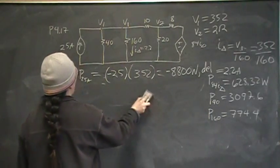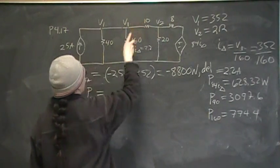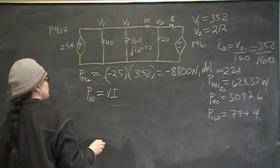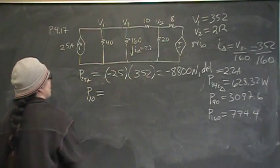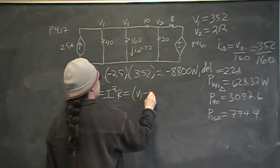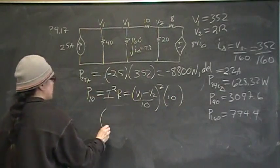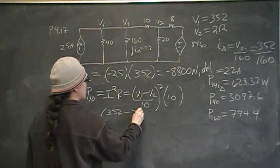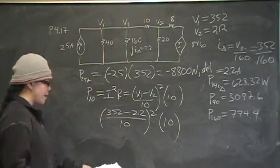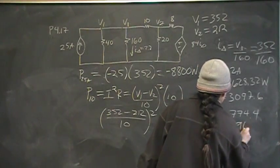Now the 10 ohm resistor. So P10 is equal to I squared R. And I is V1 minus V2 over 10 squared. And then R is just 10. So V1 is 352 minus V2 which is 212 over 10 squared that. And that should give you 1960. So P10 is 1960 watts.